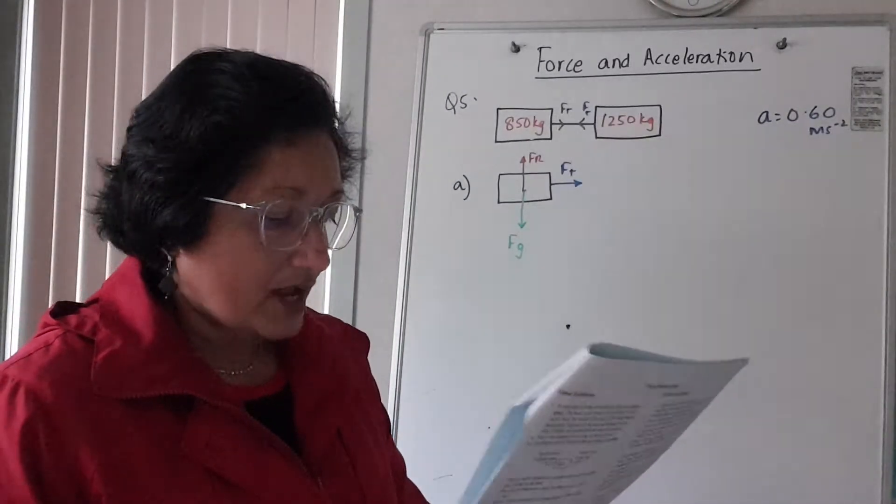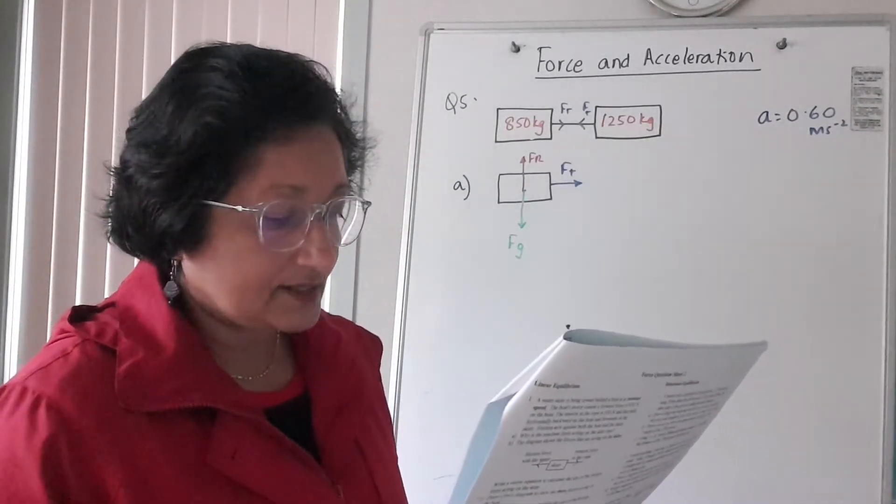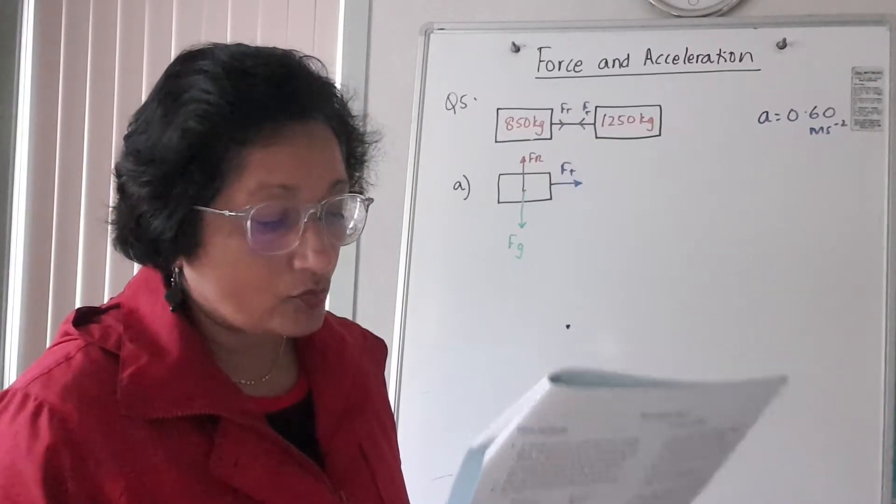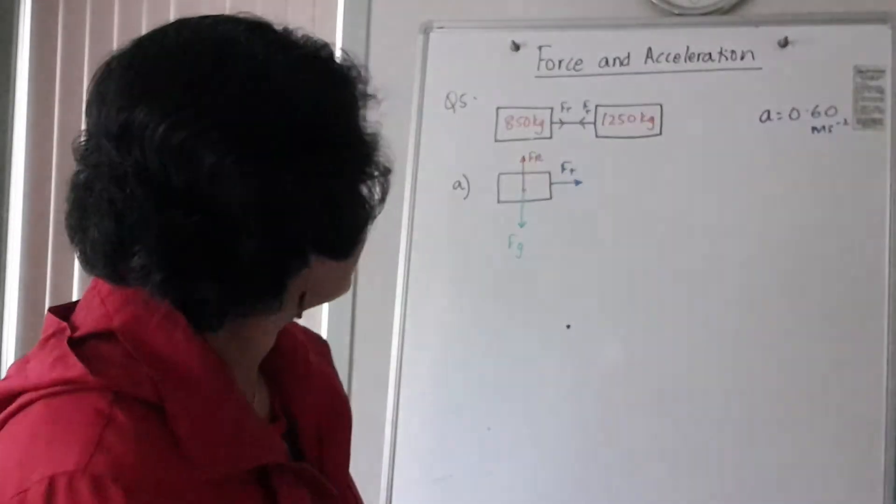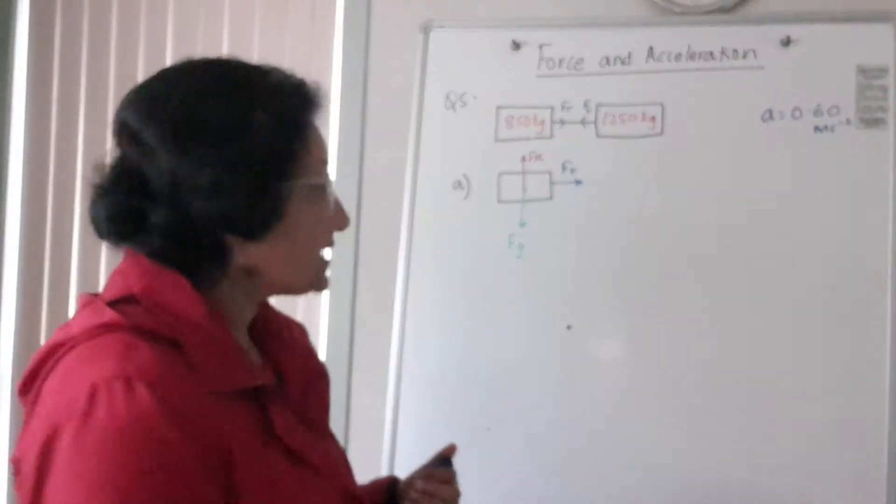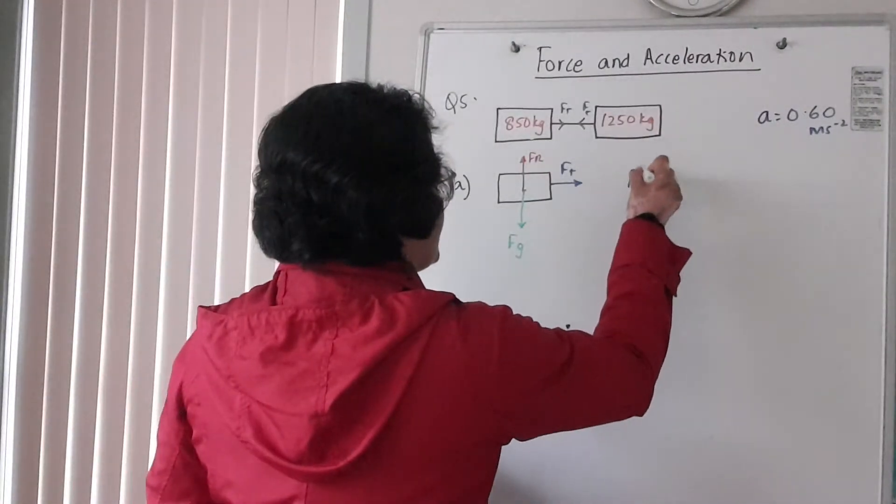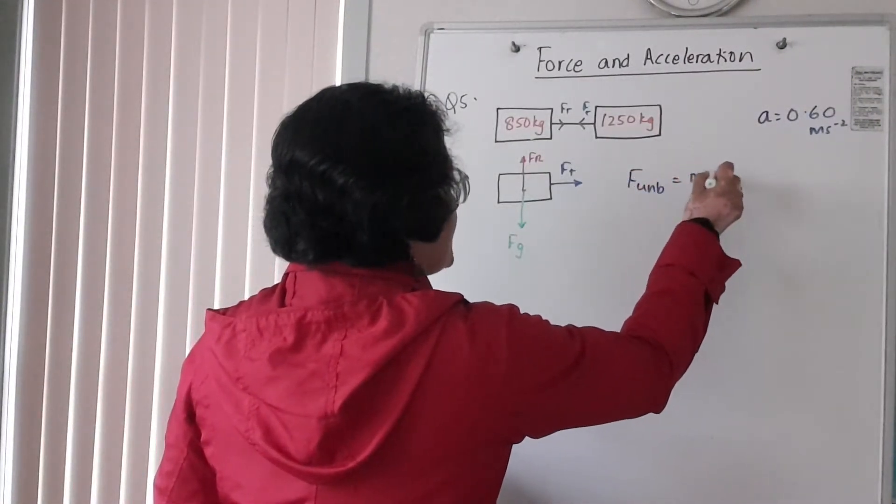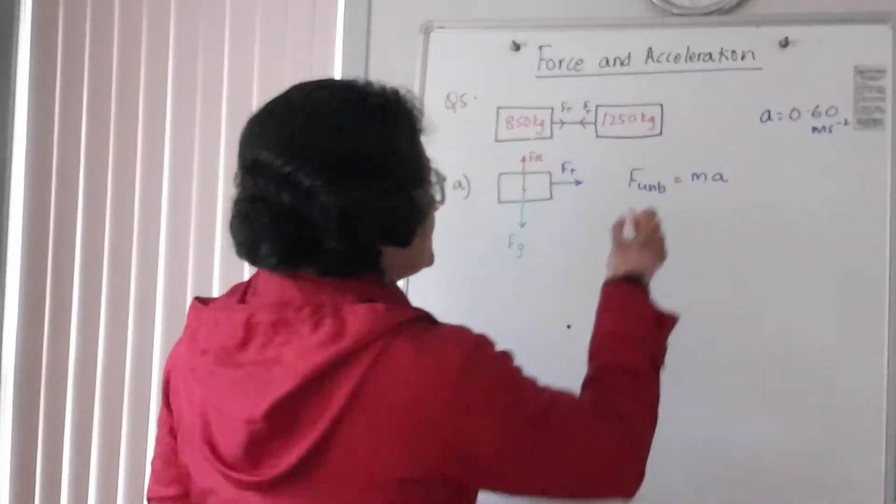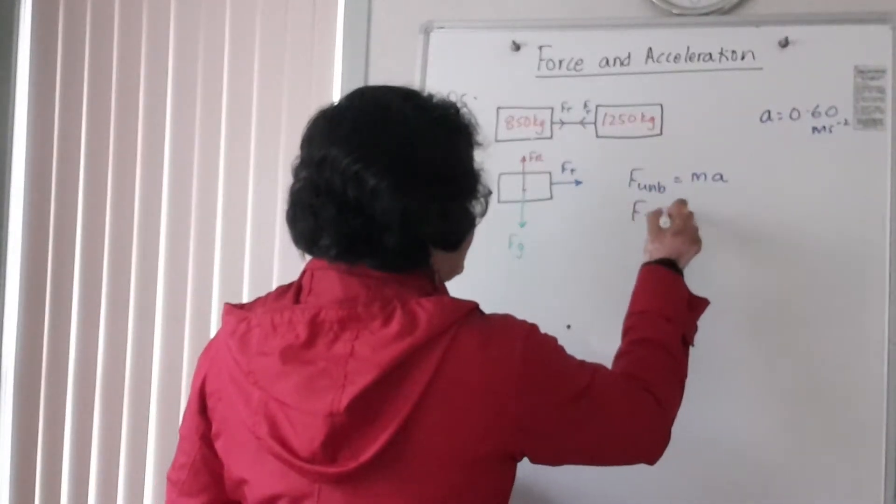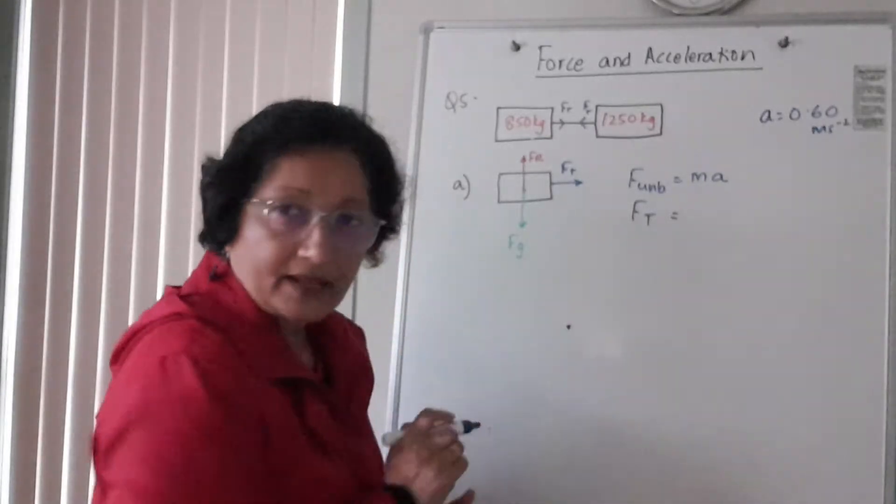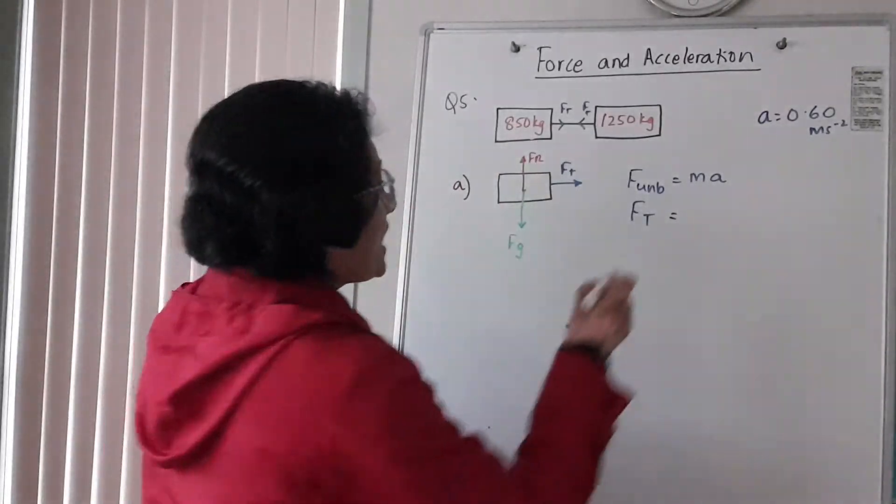So write a vector equation and calculate the tension in the tow rope. Now the tension force is your unbalanced force, and your unbalanced force is equal to m times a. So instead of unbalanced I'll write tension because that is the unbalanced force. Your mass of the car is 850 kilograms.